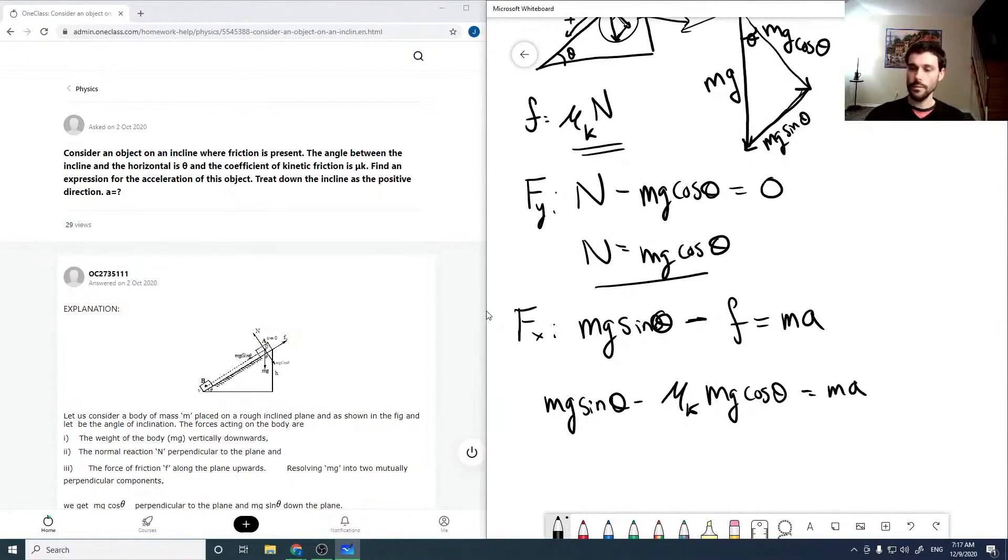We can remove m from several places and we can also pull g out of this expression. And I'm just going to swap which side of the equation a is on just because we need to solve for a. So our a is g times sine theta minus mu k cos theta.